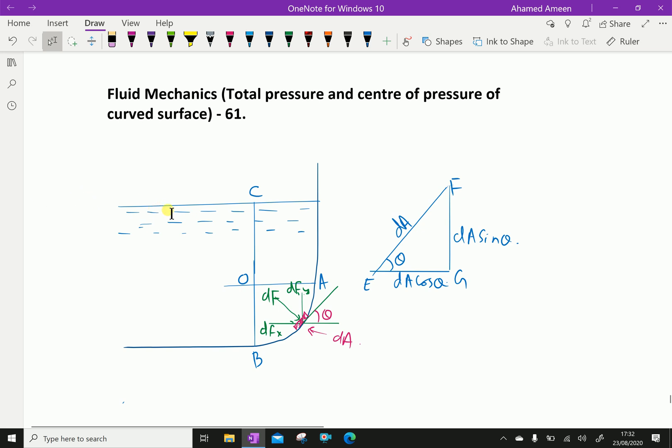Here, look at this figure. AB is a curved surface submerged in liquid. We have to find total pressure and center of pressure.